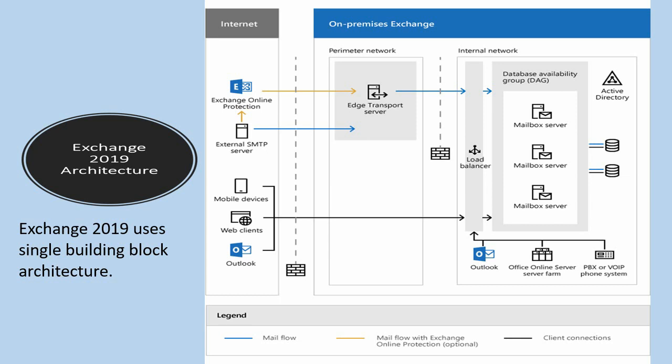It has a hardware load balancer for internal and external client access traffic. An edge server is in a perimeter network connecting to the Exchange site LAN through an internal firewall. There is an external facing firewall protecting the edge server. Exchange Online Protection, also known as EOP, provides additional mail filtering and protection service over and above the edge server. Using EOP along with the edge server is optional.